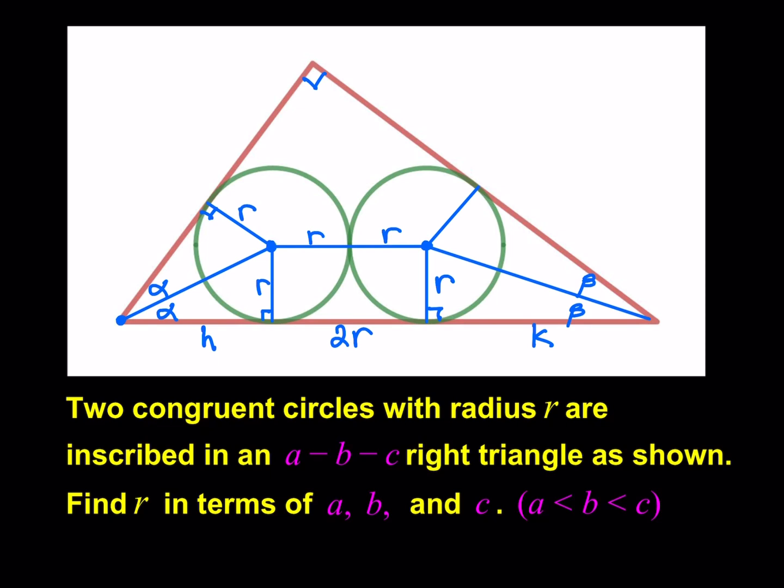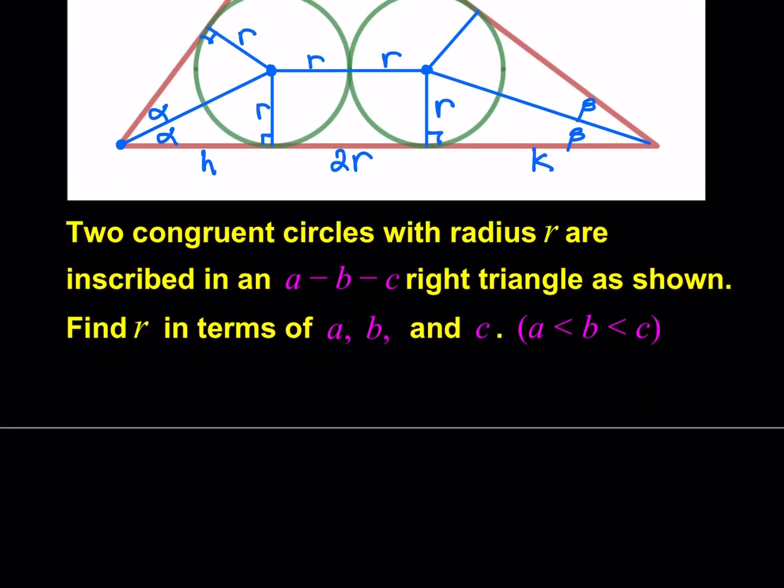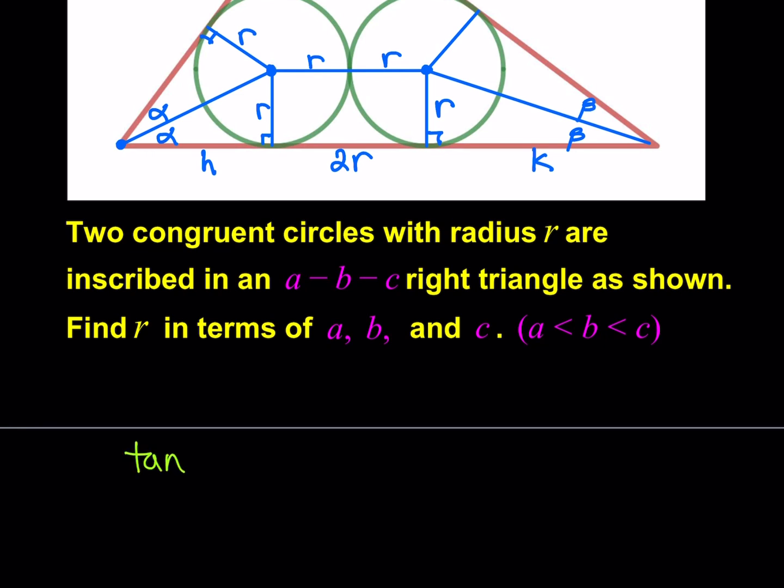As you know, these are right triangles, so those are the bases. How can I use trigonometry to associate H and R? It's tangent. So I'm going to use tangent. I'm going to write tangent alpha. Tangent alpha is going to equal R over H. And tangent beta equals R over K. Beautiful.